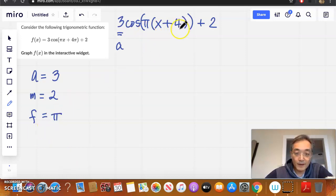Our frequency here, our frequency looks like it's π. And our phase shift, right there. I am going to call that C. Our phase shift looks like it's 4. And it's added, so it looks like it's 4 units to the left.